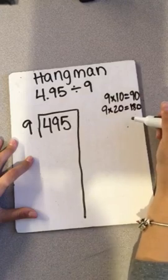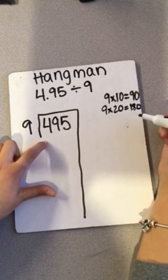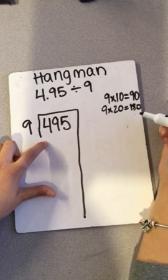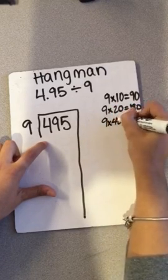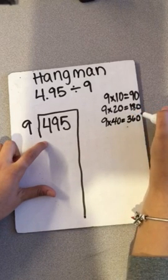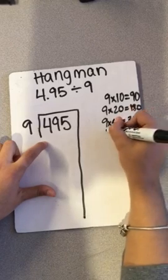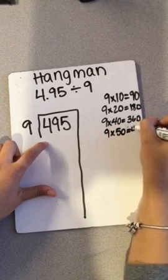I want to make sure I can get groups that are as close to 495 as possible. So I can do 9 times 40, which is 360. I can do 9 times 50, which is 450.